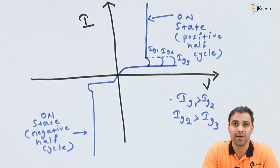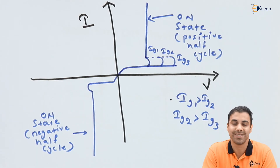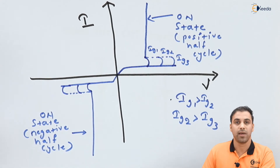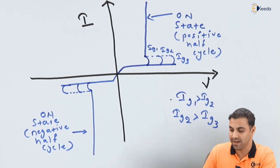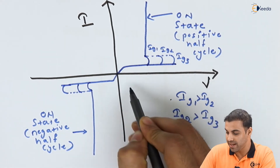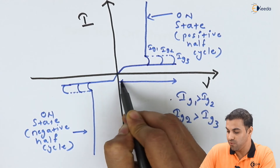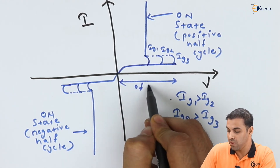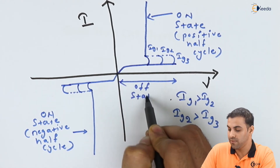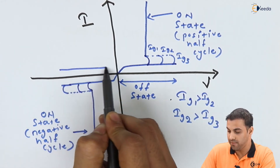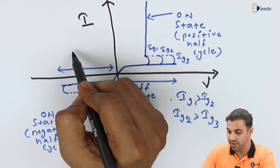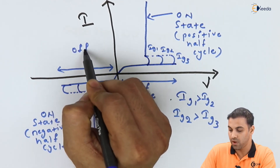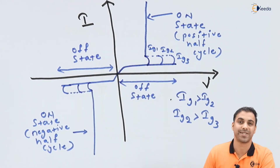If the gate current is higher, the time will be faster; if the current is lower — less than the latching current — the time to reach conduction will be longer. The region from before the breakdown point to the breakdown is the OFF state in both the forward and reverse biased conditions.